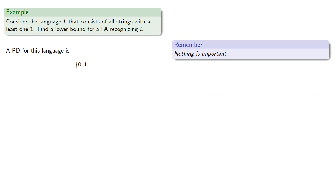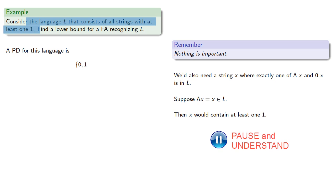But wait, we're not done yet because that only says lambda is distinguishable from 1. We'd also need a string x where exactly one of lambda x and 0x is in L. So suppose lambda x, which is to say x, is in L. Then x would contain at least one 1, but then 0x would also be in L.